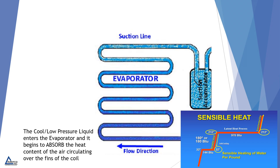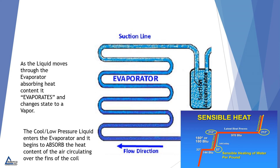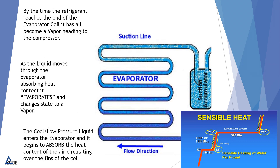The cool, low-pressure liquid enters the evaporator and it begins to absorb the heat content of the air circulating over the fins of the coil. As the liquid moves through the evaporator absorbing heat content, it evaporates and changes state to a vapor. By the time the refrigerant reaches the end of the evaporator coil, it has all become a vapor heading to the compressor.